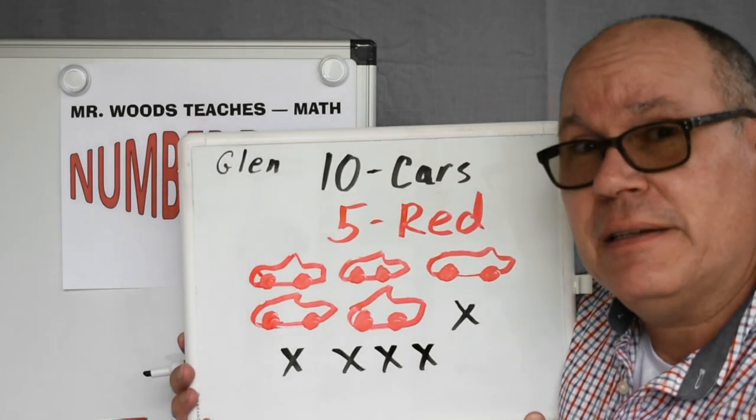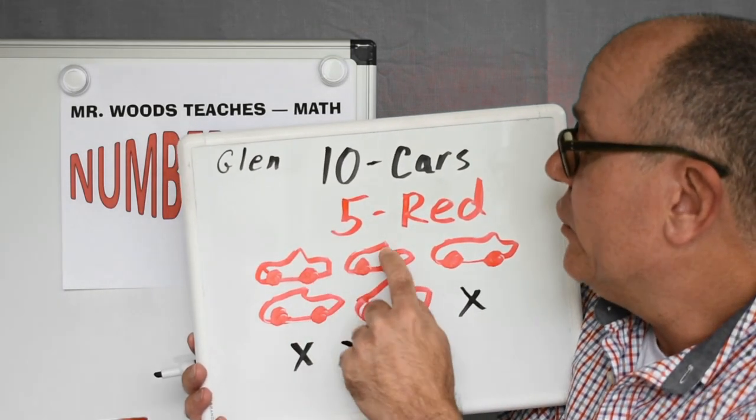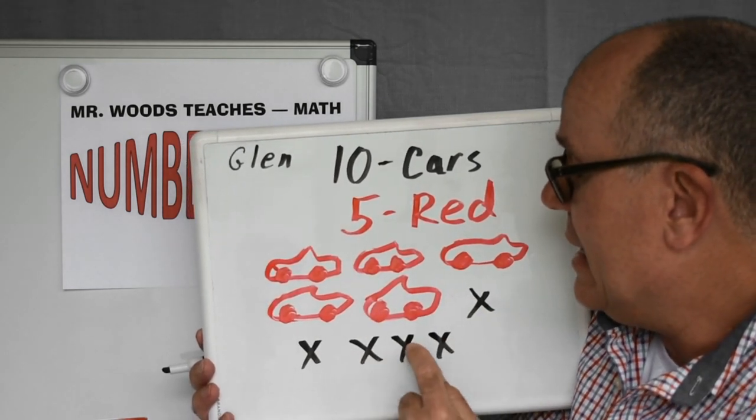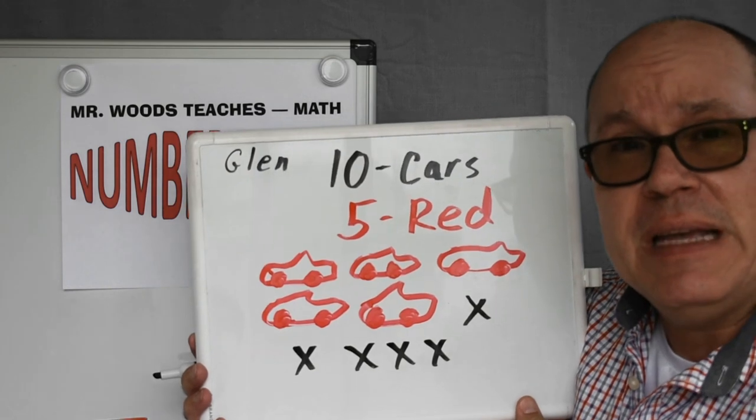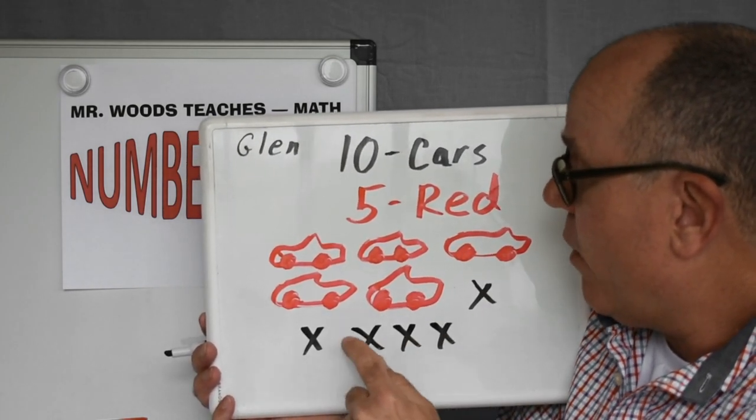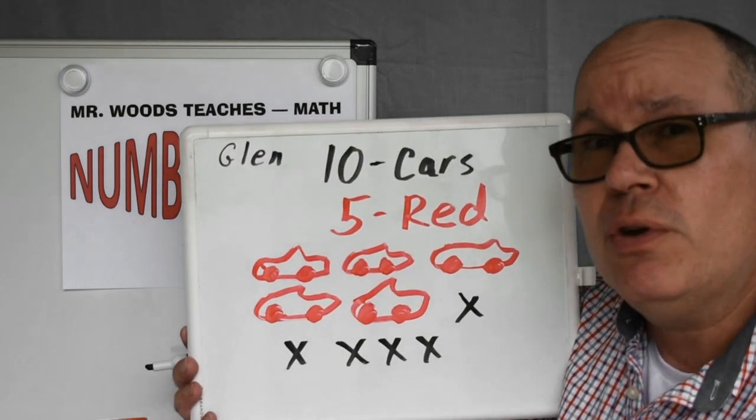Do you think that's correct? 1, 2, 3, 4, 5, 6, 7, 8, 9, 10. Oh! So that means that he has 1, 2, 3, 4, 5 blue cars.